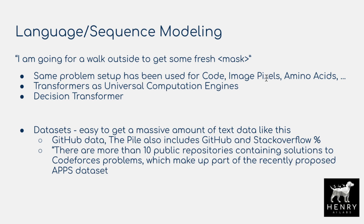'Transformers as Universal Computation Engines' looks at how well pre-trained transformers can do image classification, treating pixels as a sequence. Same with the Image GPT model. It's not quite state-of-the-art yet for image generation going autoregressively left to right, but very interesting — especially for code and amino acids. The Decision Transformer shows reinforcement learning can also be framed as a sequence modeling problem, with state-action trajectories mapped to reward.